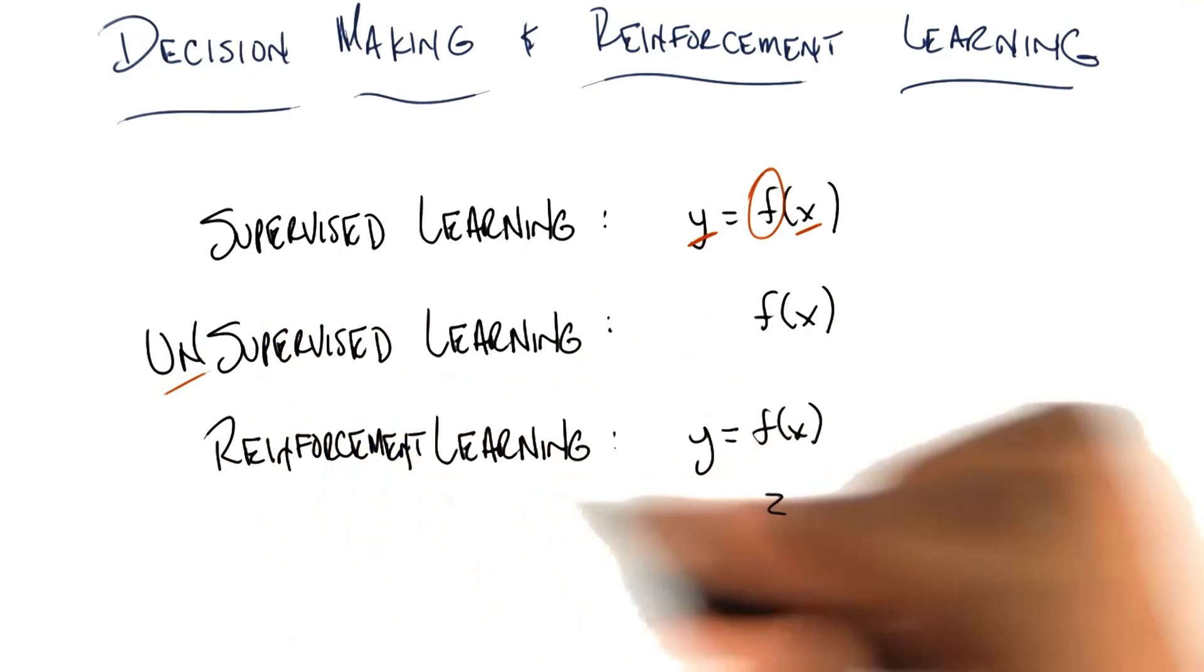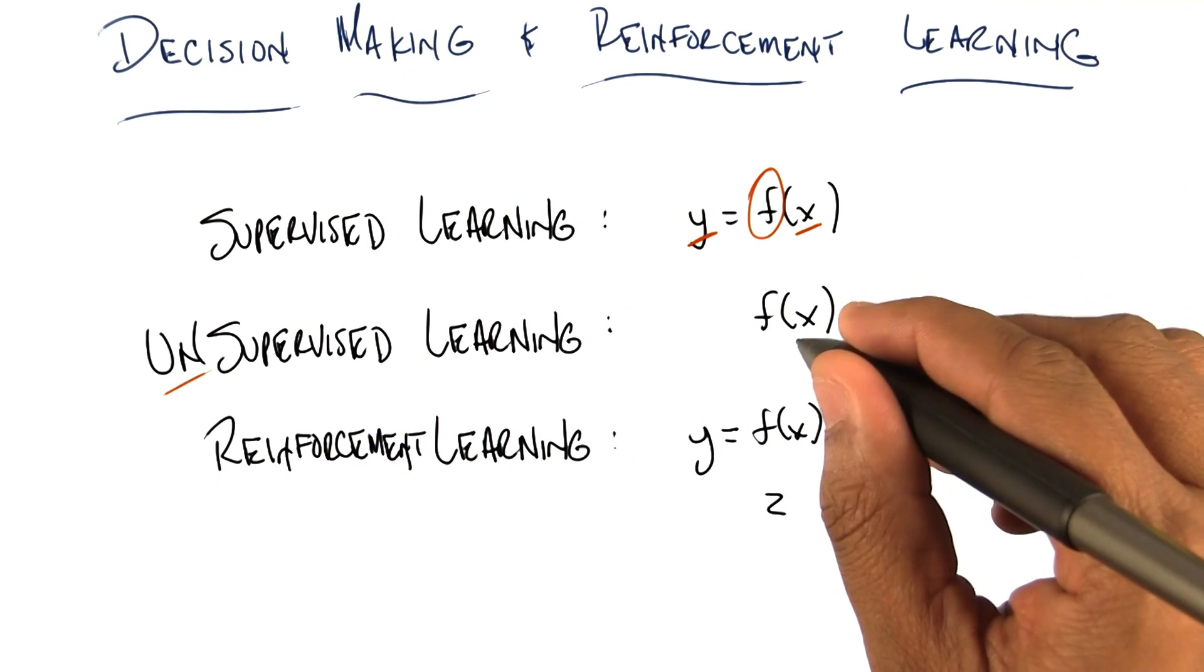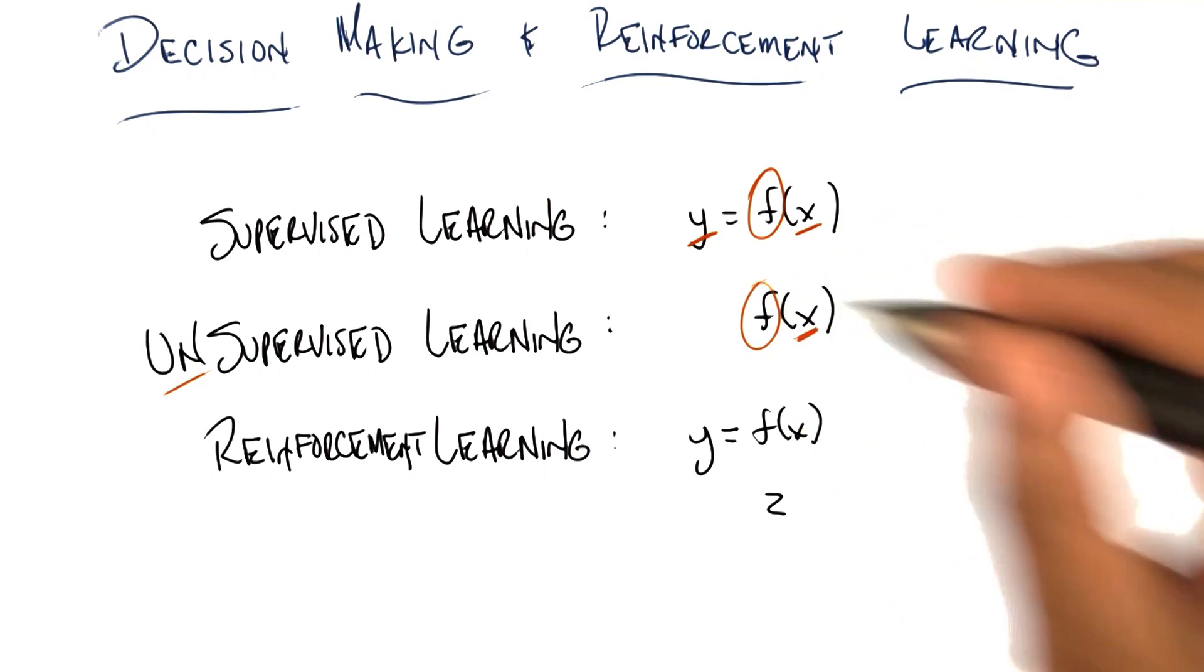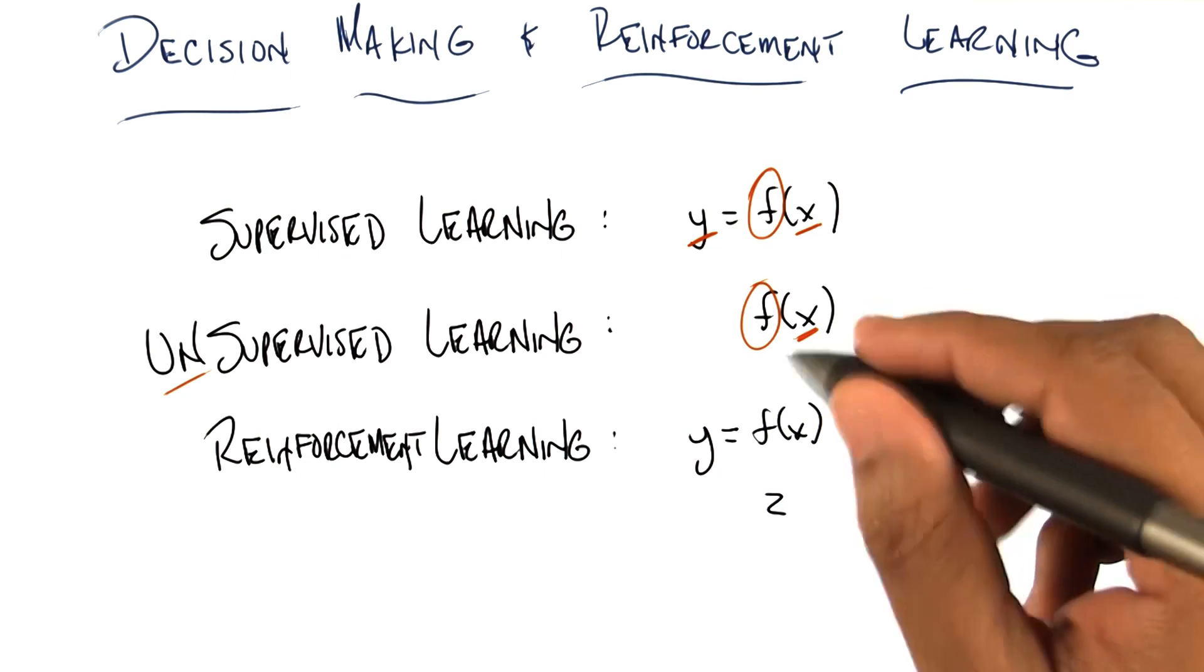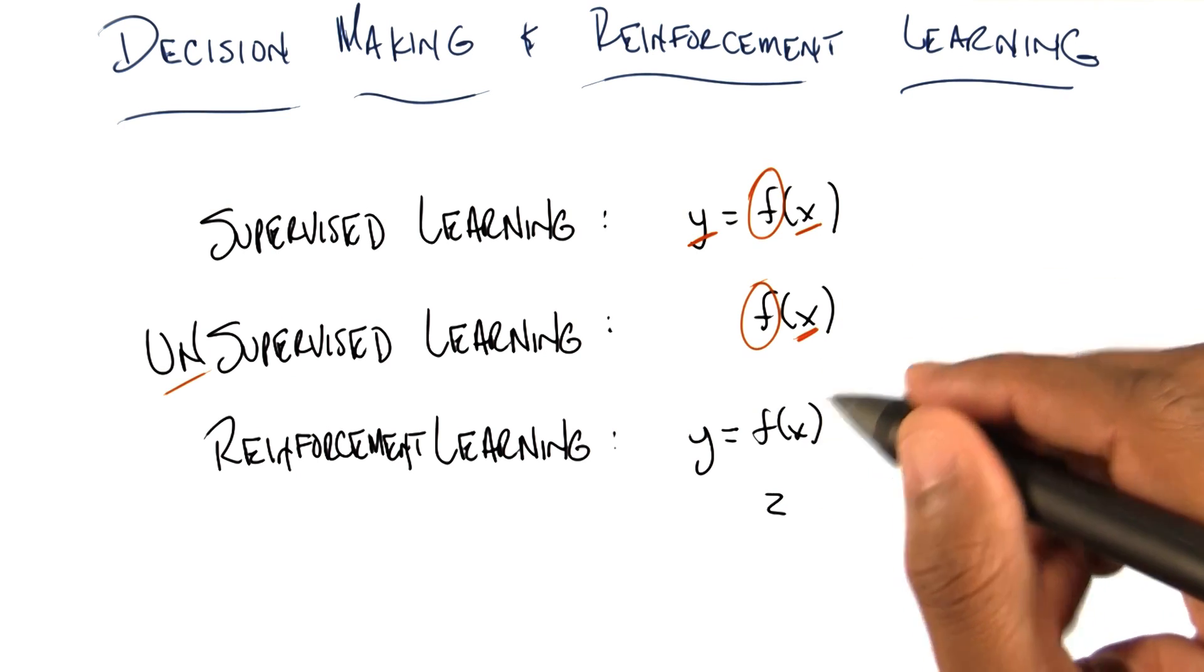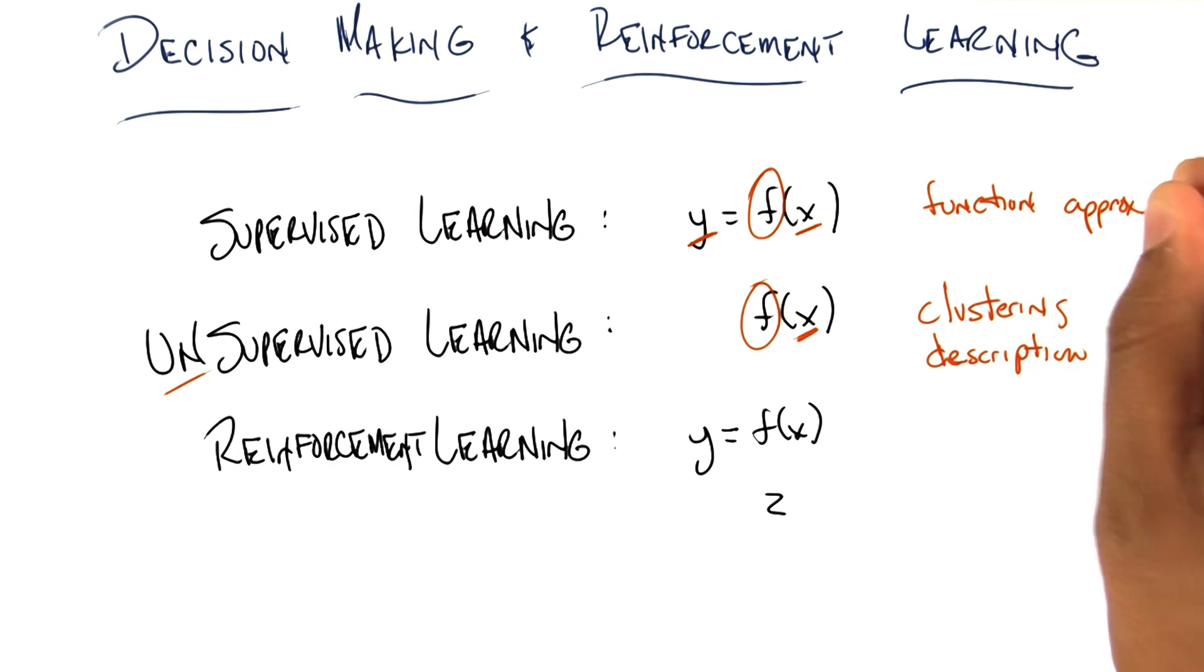Unsupervised learning is very similar to supervised learning, except that it turns out that you're given a bunch of x's, and your goal is to find some f that gives you a compact description of the set of x's that you've seen. So we call this clustering, or description, as opposed to function approximation.